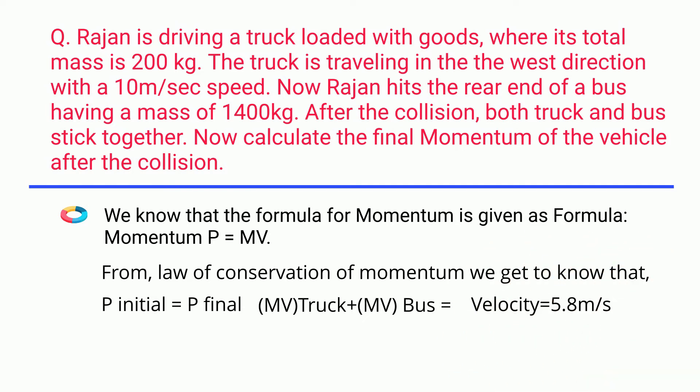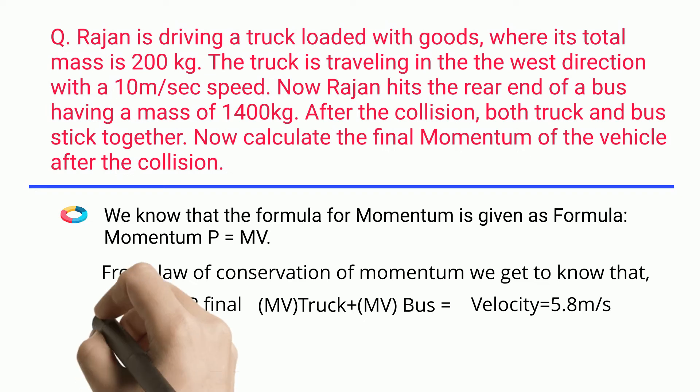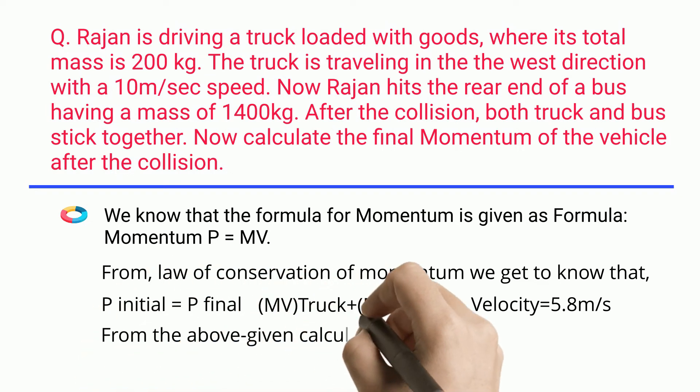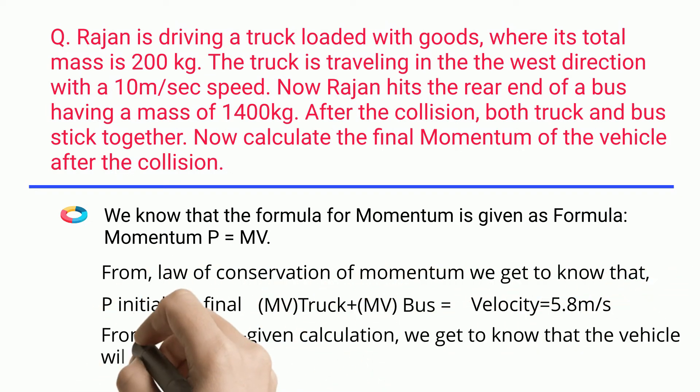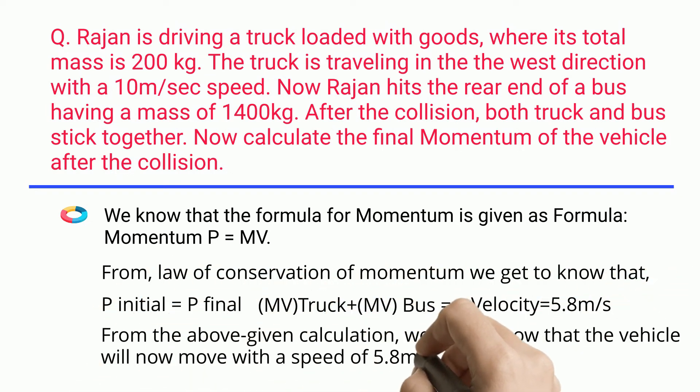Setting up the equation: mv of truck plus mv of bus equals the combined momentum. The resulting velocity equals 5.8 m/s. From the above calculation, we get that the vehicle will now move with a speed of 5.8 m/s.